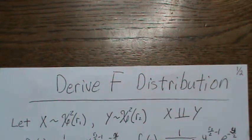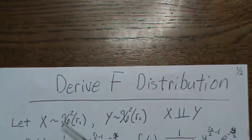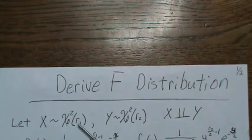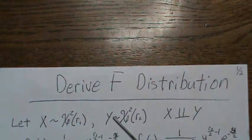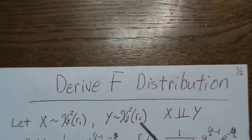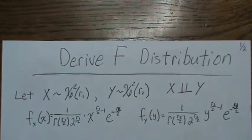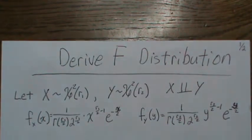Here we're going to derive the F distribution, which can be shown to be the ratio, or weighted ratio, of two chi-squares. The numerator chi-square would have r1 degrees of freedom, and the denominator y would be chi-square with r2 degrees of freedom, with x and y independent, using the chi-square densities of x and y.